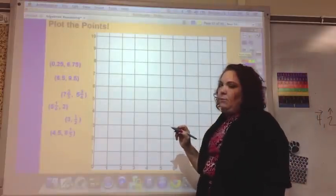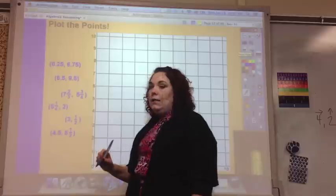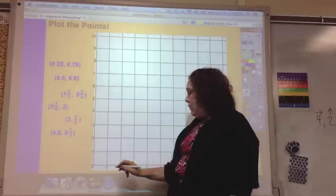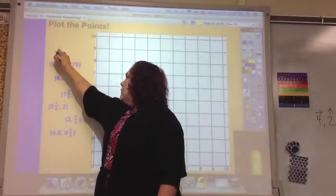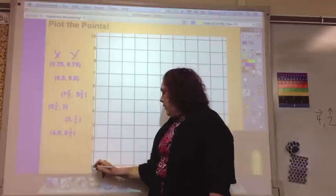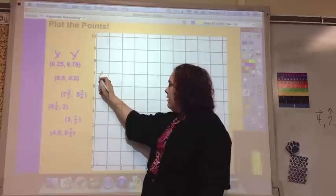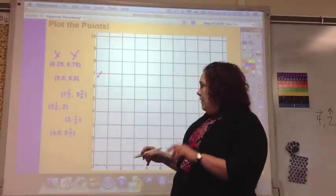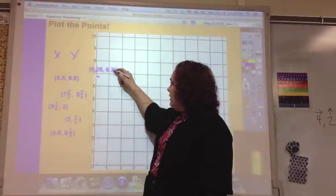If we were going to plot these points, 0.25 is one-fourth. It's barely bigger than zero. So, we would go over, this is the x, and this is the y. We would go over 0.25 and go up 6.75. That's almost seven. And that would be this ordered pair.